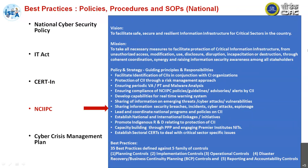NCIIPC has policy and strategies, guide principles and responsibilities, and facilitates the identification of critical information infrastructures in consultation with CII organizations. They do protection of CII through a risk management approach, develop capability for real-time warning systems, have VAPT and malware analysis, ensure sharing of information on emerging threats, cyber attacks, and vulnerabilities, share information on security breaches, incidents, cyber attacks, and espionage, and lead and coordinate the national program and policy on CII.